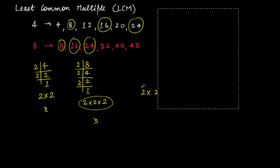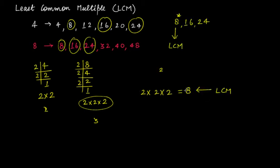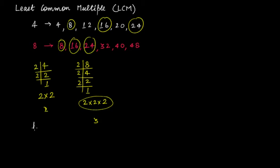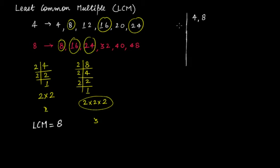Just remember that in Part 1, LCM of 4 and 8 was 8. Now I'll show you this faster method. You have 4 and 8 and you need to find the least common multiple. Write 4 comma 8, then draw a vertical line and a horizontal line. Start from the smallest prime number that can divide either 4 or 8 or both.